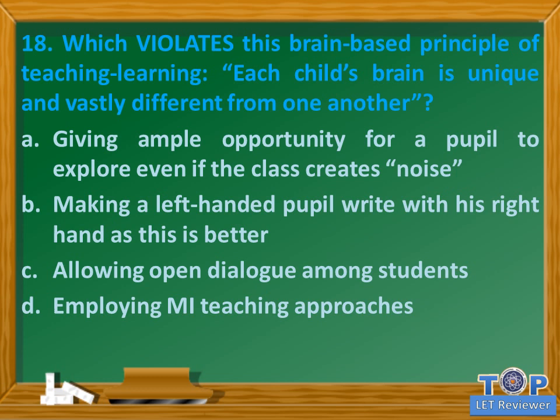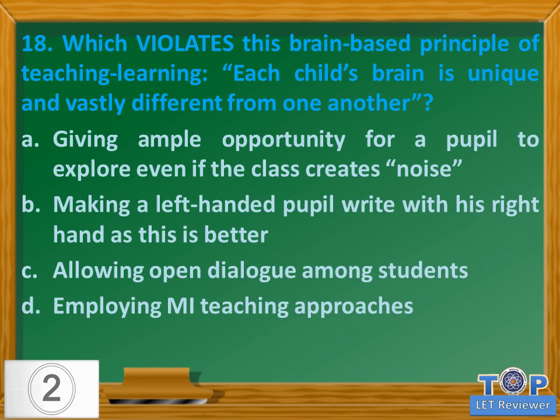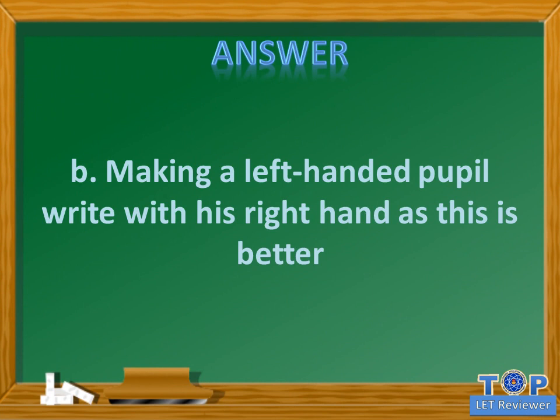Question number eighteen: which violates the brain-based principle that each child's brain is unique and vastly different from one another? A) giving ample opportunity for a pupil to explore even if the class creates noise, B) making a left-handed pupil write with his right hand, C) allowing open dialogue among students, D) employing multiple teaching approaches. Answer: B) making a left-handed pupil write with his right hand.